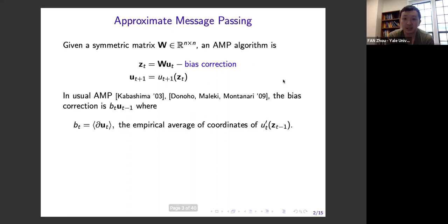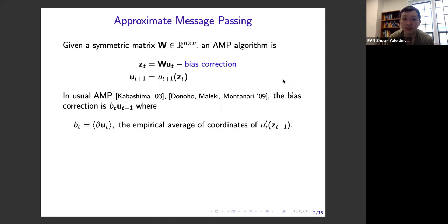The defining property of AMP — what makes it AMP — is this bias correction. The purpose of this bias correction is to simplify the dynamics of the algorithm and to make the iterates describable in a relatively simple form by a simple Gaussian state evolution. In the usual forms of AMP as introduced by Kabashima and Donoho-Maleki-Montanari, the form of this bias correction has a particular quantitative form: it's given by a scalar b_t times the iterate u_{t-1}.